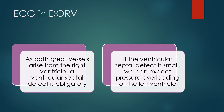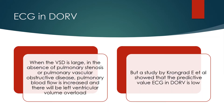Since both great vessels arise from the right ventricle, a ventricular septal defect is obligatory. If the ventricular septal defect is small, we can expect pressure overloading of the left ventricle. When the VSD is large, in the absence of pulmonary stenosis or pulmonary vascular obstructive disease, pulmonary blood flow is increased and there will be left ventricular volume overload.